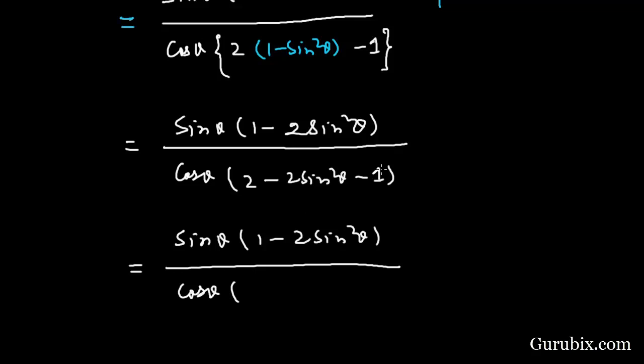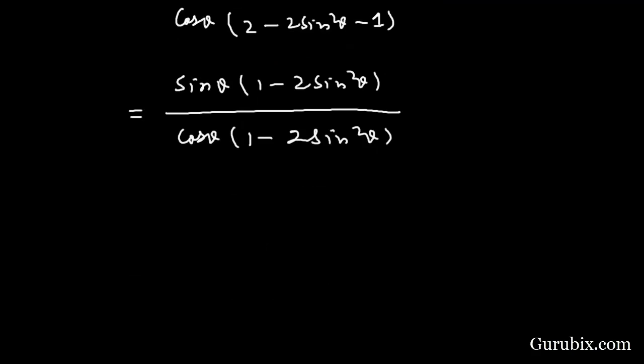If we subtract 1 from 2, we get (1 - 2sin²θ). Now we can cancel out this value from numerator and denominator. We are left with sin θ over cos θ, which equals tan θ.